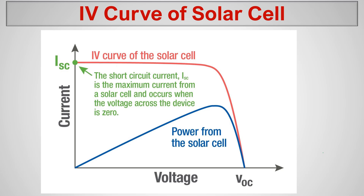Now, for those studying electrical engineering, you know what short circuit and open circuit mean. VOC is the open circuit voltage — when we open the two output terminals and measure the voltage, we get a high voltage because there is no load and no resistance drops causing a voltage drop. So we have a high voltage in the open circuit condition.